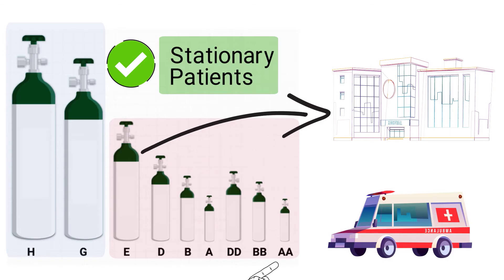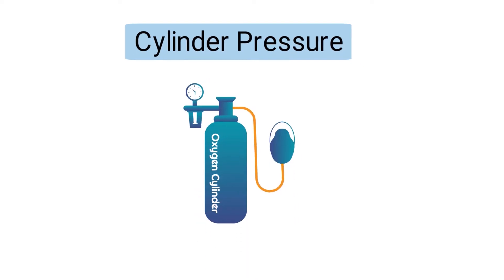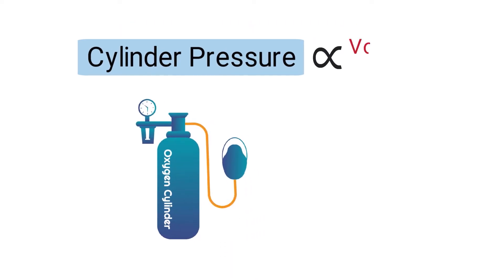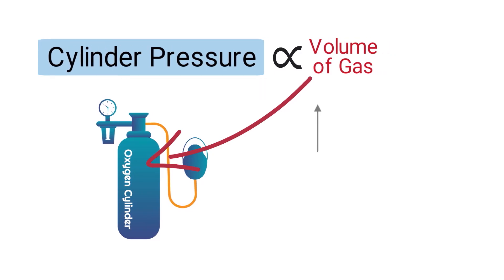Next is the cylinder pressure. The pressure of an oxygen tank is directly proportional to the volume of gas inside of the tank. Therefore, the higher the pressure, the more oxygen there is inside the tank, and vice versa.